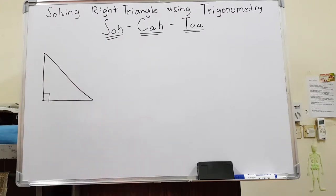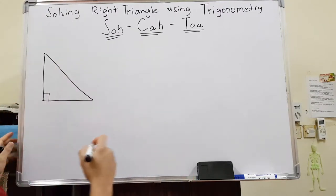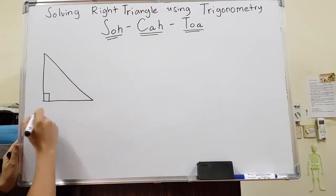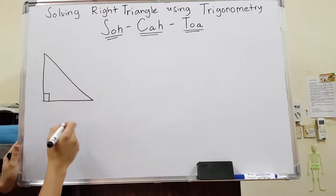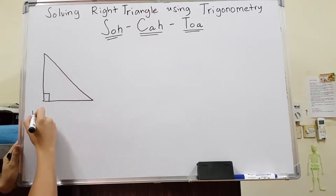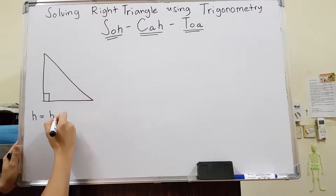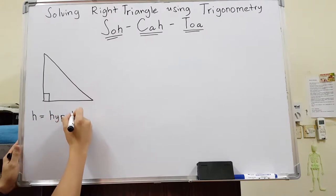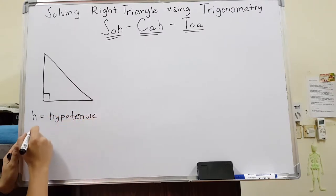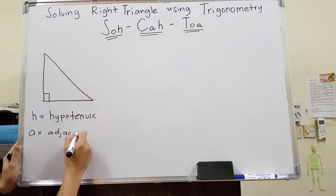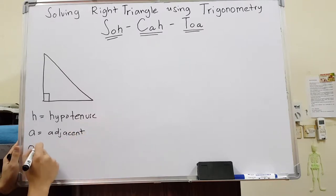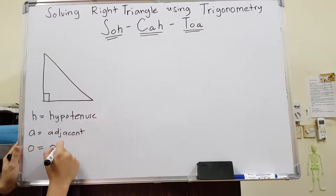We just have to know three parts. The three sides each have a corresponding name. First is H, which is hypotenuse. Then A, which is adjacent, and O, which is opposite.